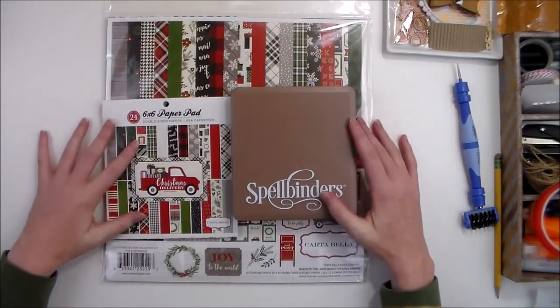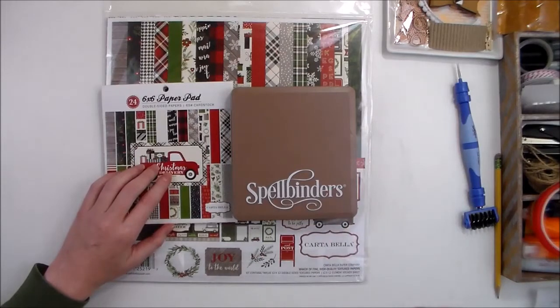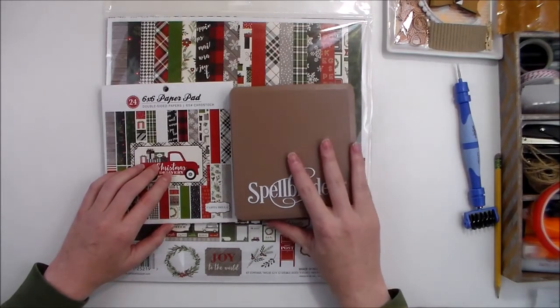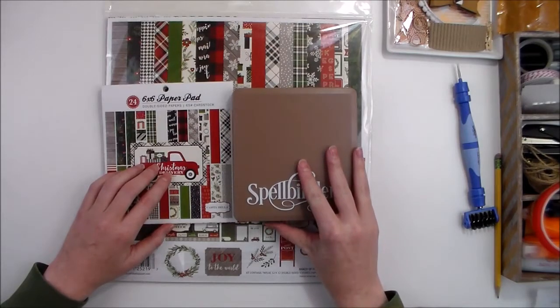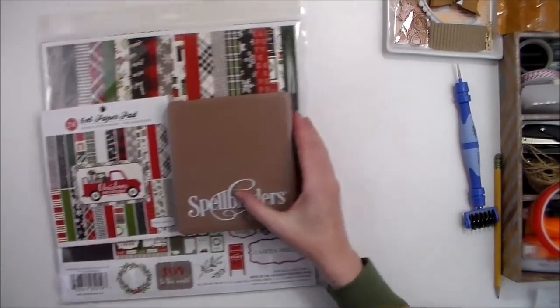Today I have a really fun project to share with you using the Christmas Delivery Collection from Cartebella Paper and dies and the new Platinum 6 die cut machine from Spellbinders. So first of all, I wanted to show you this Platinum 6 machine.